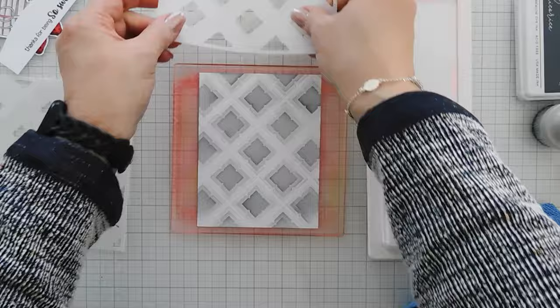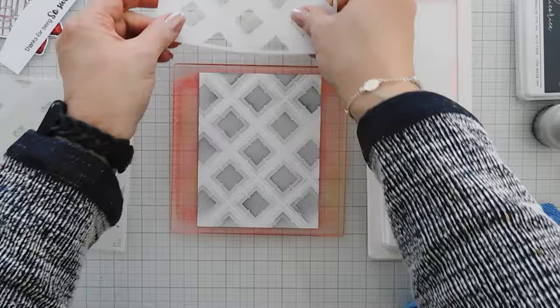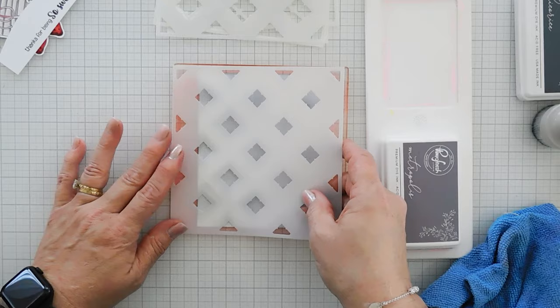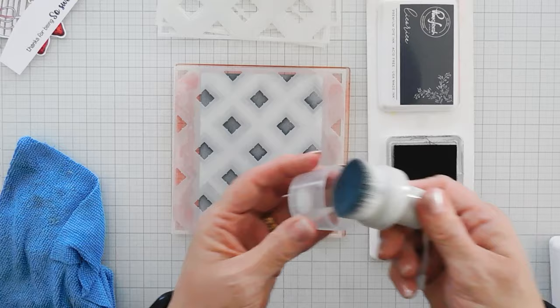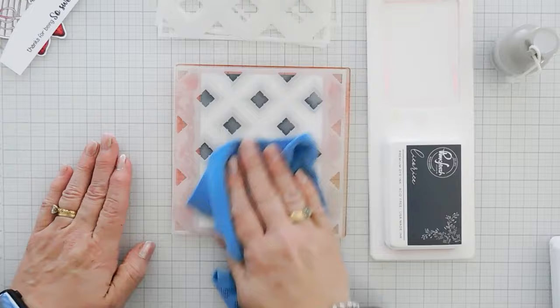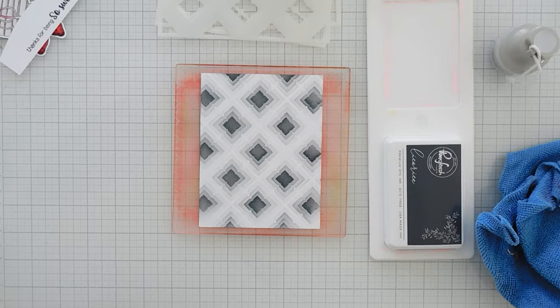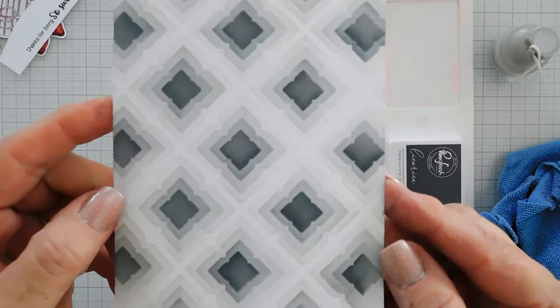So pretty. And then I'll take my final stencil, make sure it's the right way. I'm going to layer it right over the top. And that is my last color. I'm going to go ahead and close these. Wipe it off, and let's take a look. Isn't that so fun? Let me show you. I just think that's just the neatest thing. So neat.